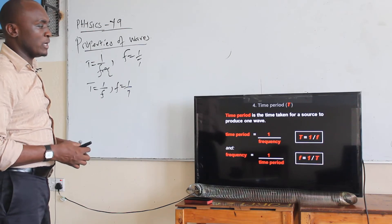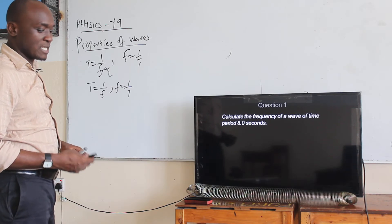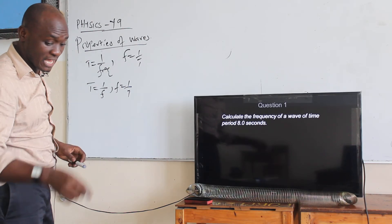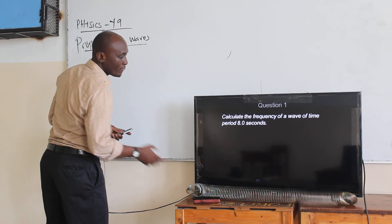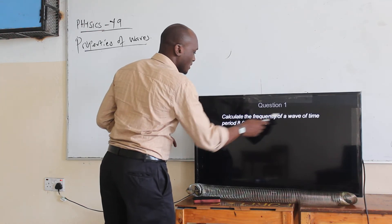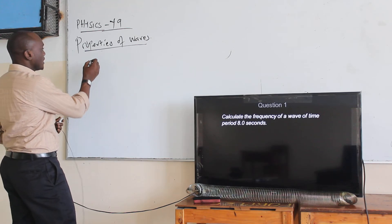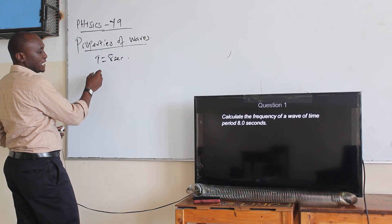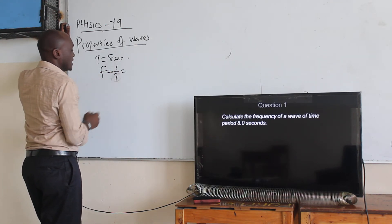There are many calculations which will use frequency, time period, or what you call the periodic time. For example: calculate the frequency of a wave of time period eight seconds. You have been given time T equals eight seconds, and we need the frequency. We know that frequency is one over T.